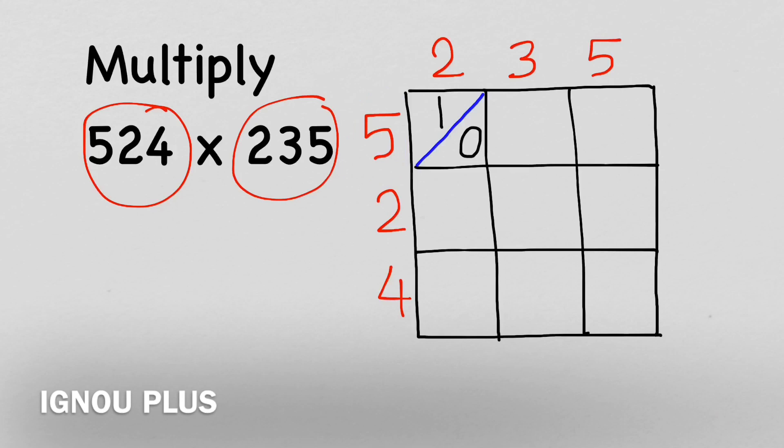Then we have 5 and 5, so 5 times 5 is 25. Same process. We will write 2 in one half and 5 in one half. Then we will go to the second row.